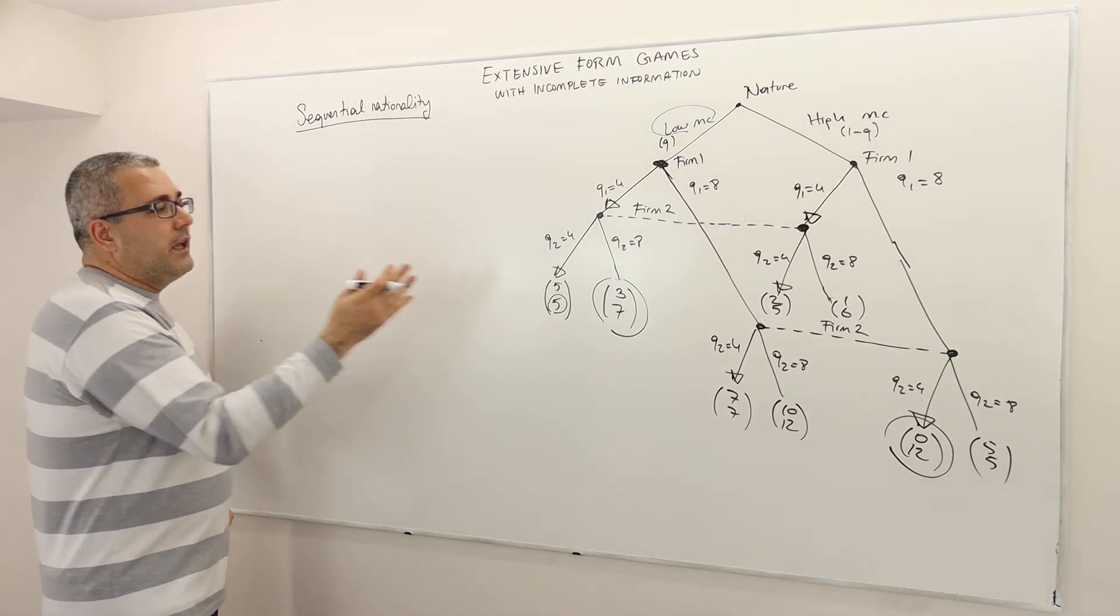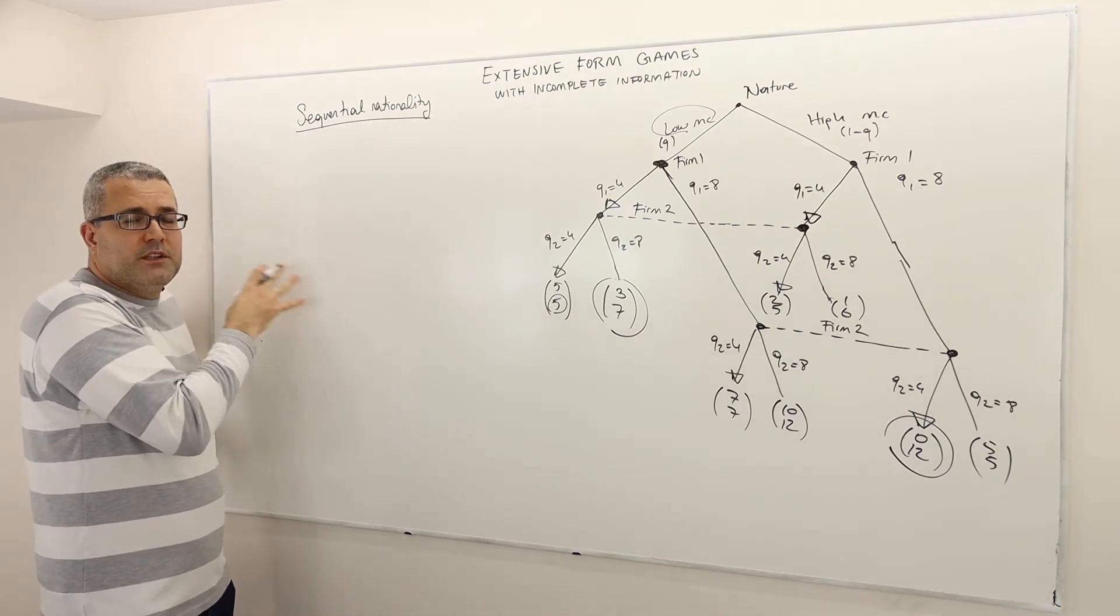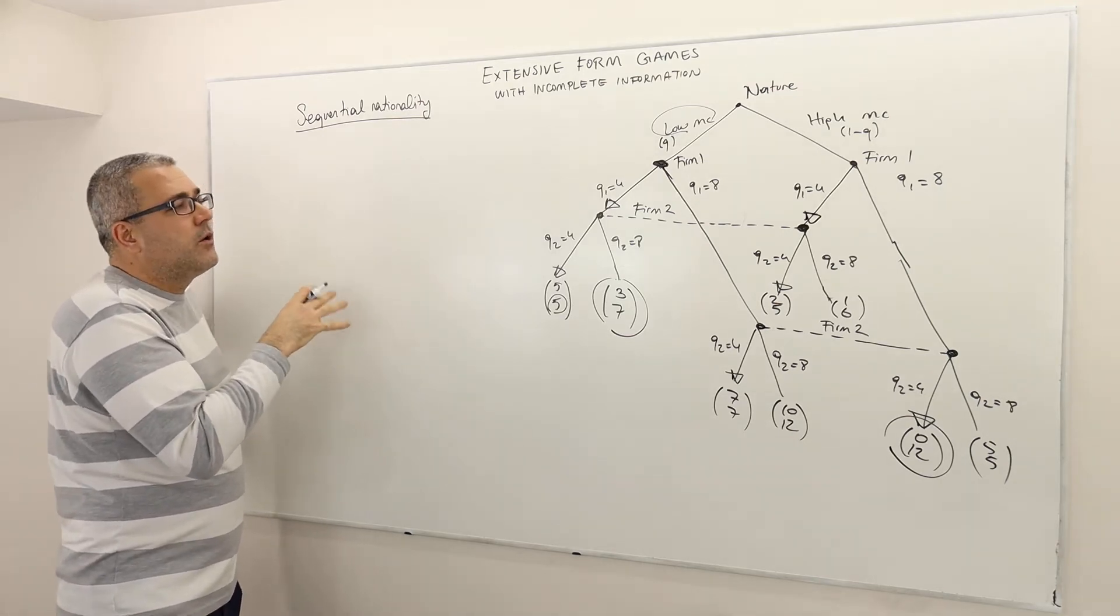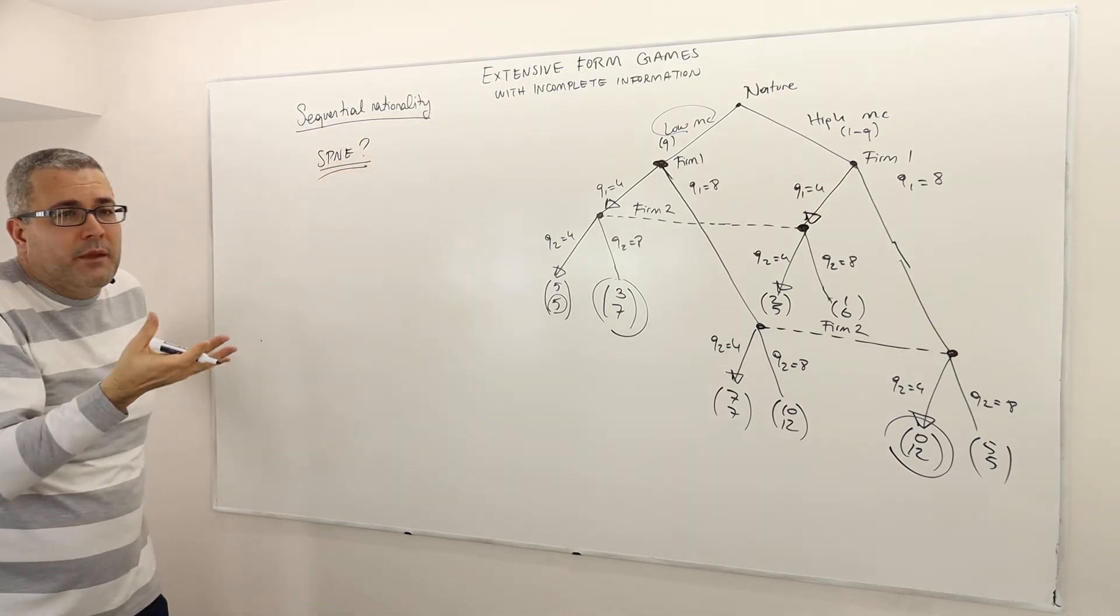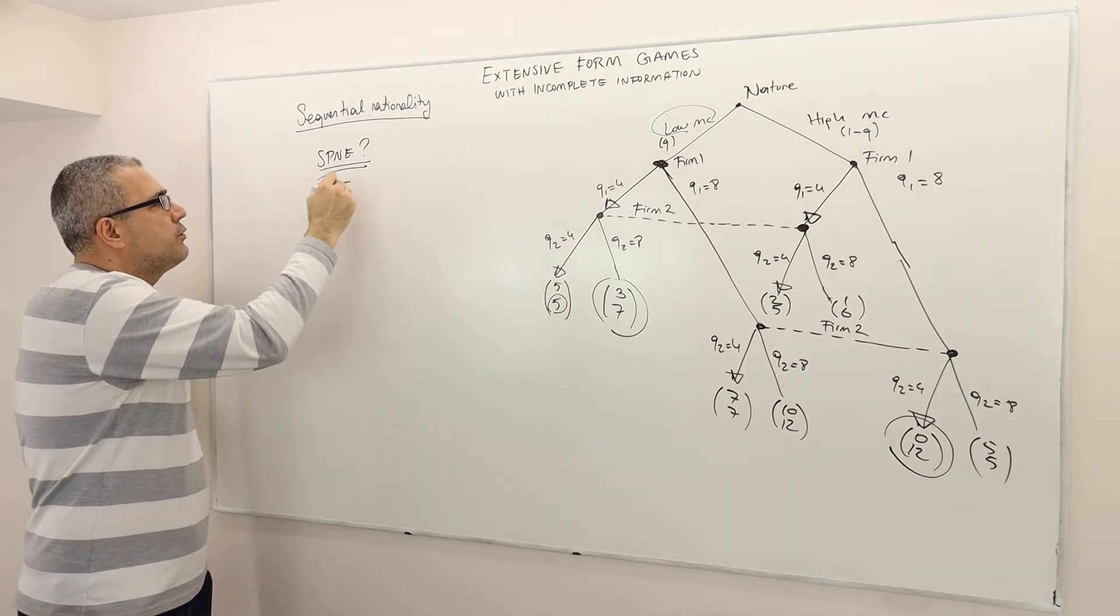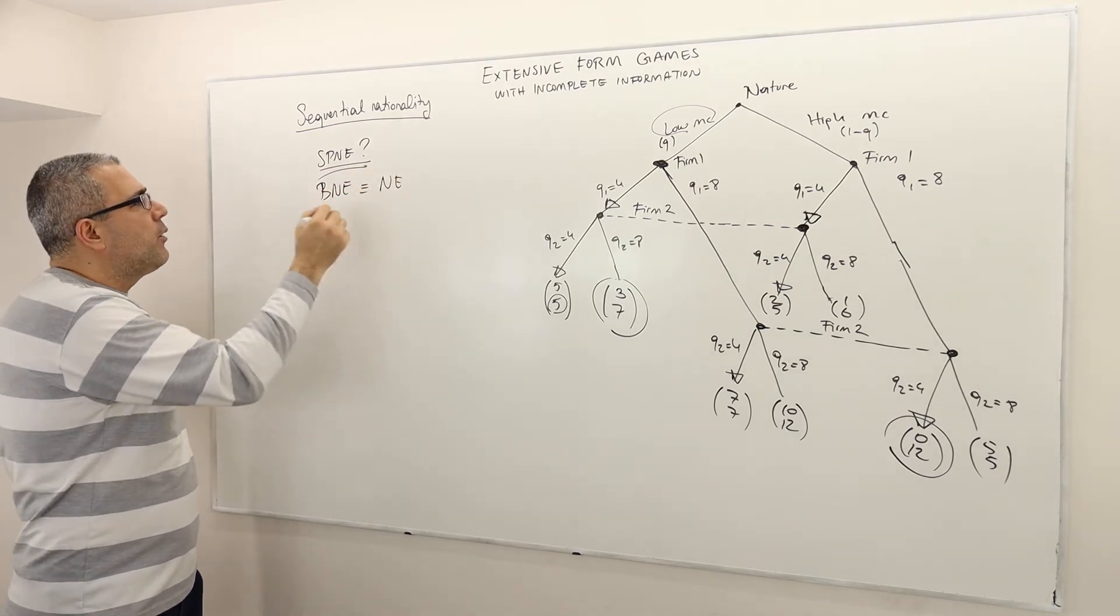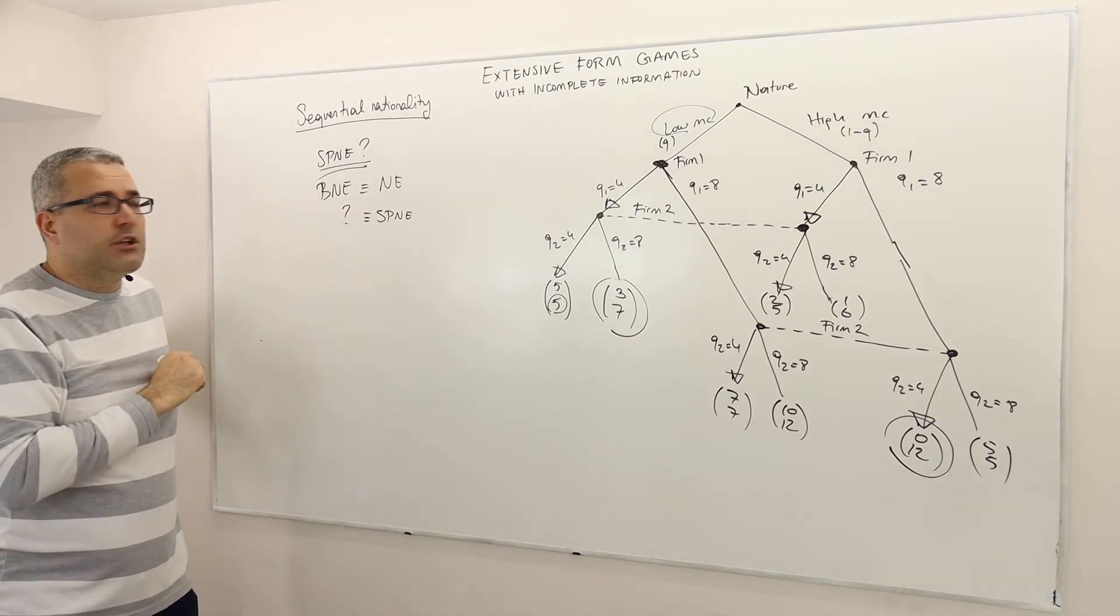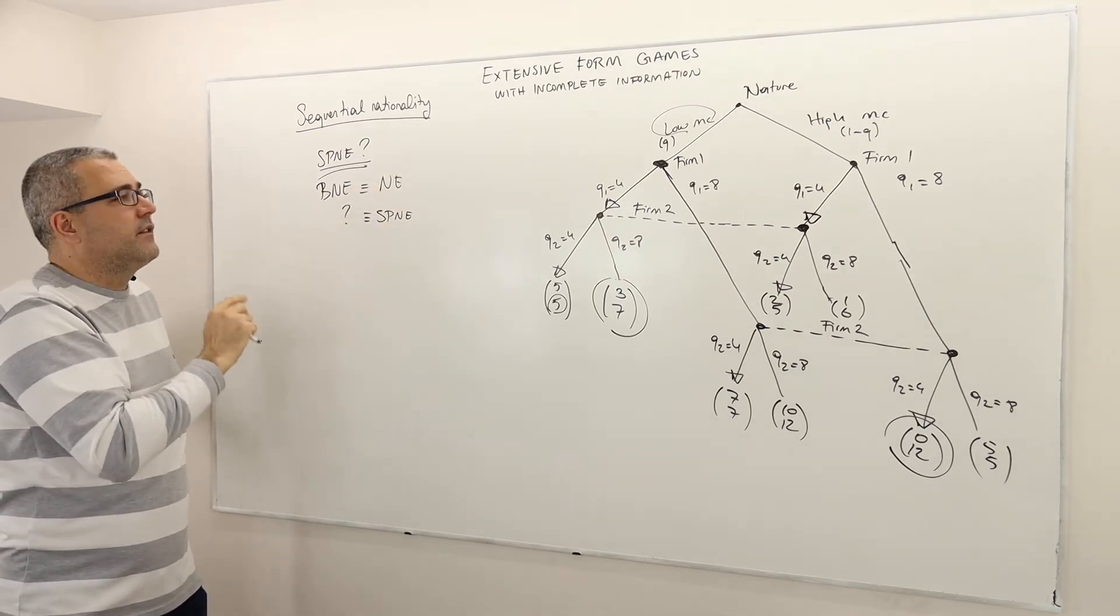So in this game, we know how to find Nash or Bayesian Nash equilibrium, but probably there's going to be a lot of them and some of them will not be reasonable or meaningful. So can we find the subgame perfect Nash equilibrium of this game? Or I mean, remember, Bayesian Nash equilibrium was the equivalent of Nash equilibrium in incomplete info games. But what is the equivalent version of the subgame perfect Nash equilibrium when there is incomplete information that we haven't learned yet?